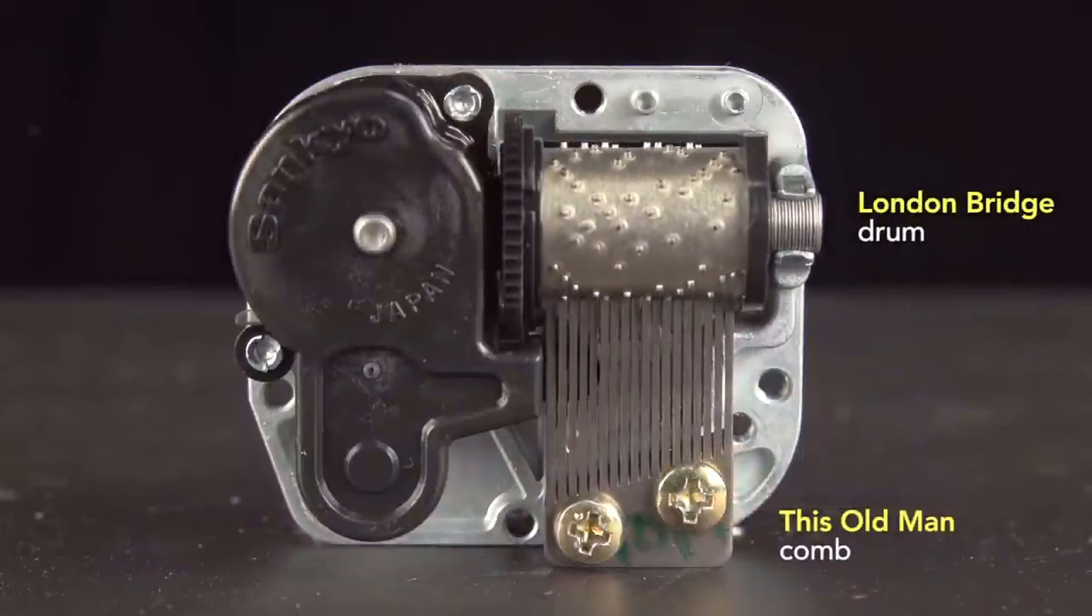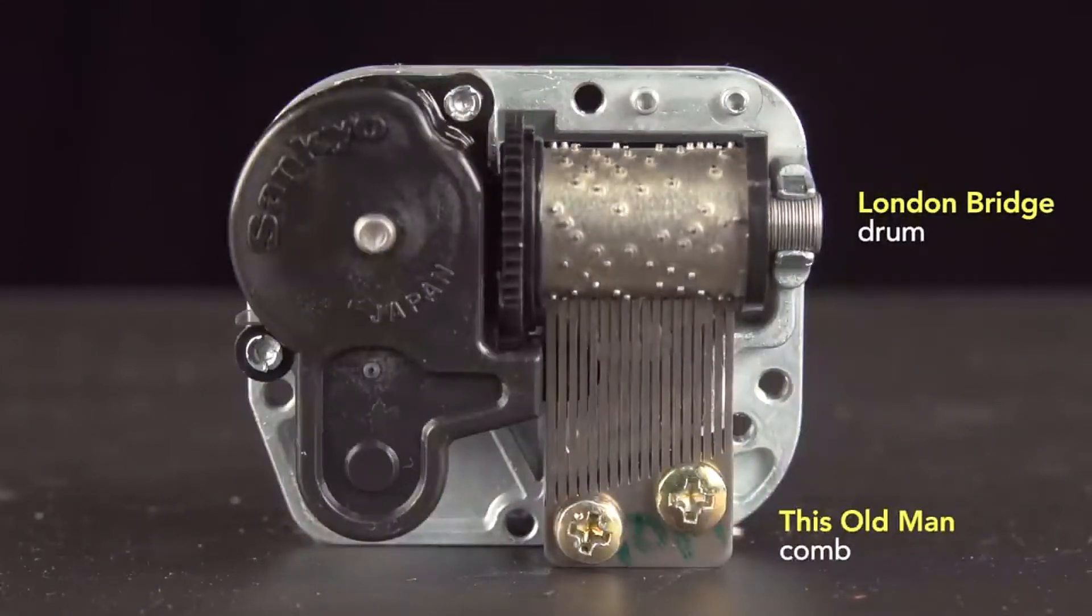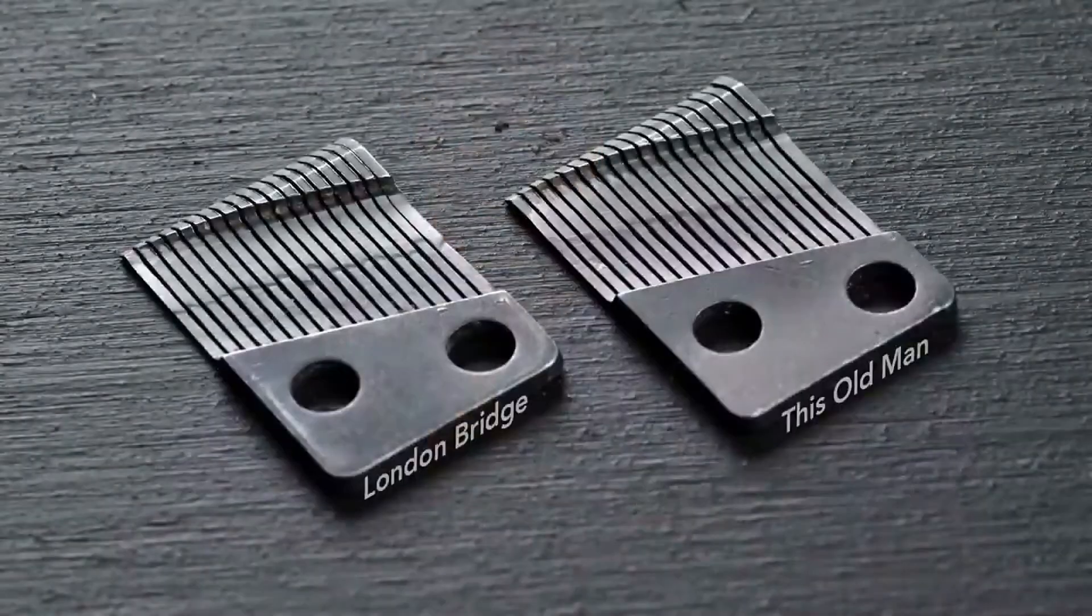And now, here it is with the comb cut for a different melody, This Old Man. The timing is the same, but the notes are different, and it sounds odd. The difference in weighting is so subtle that these two combs are indistinguishable by eye.